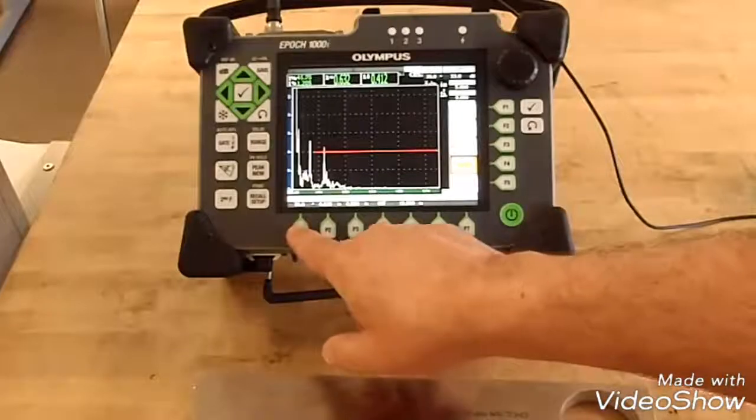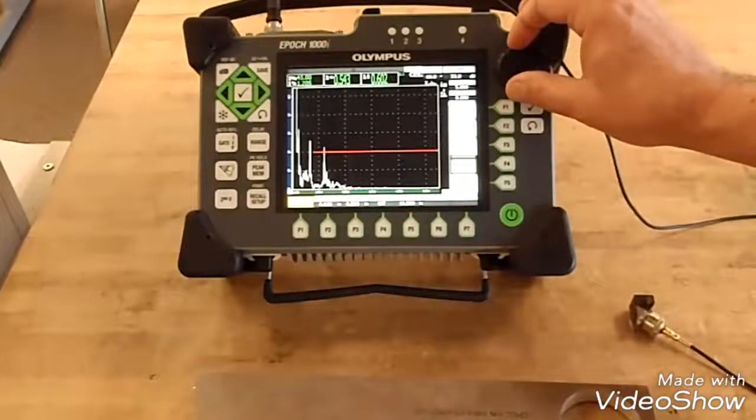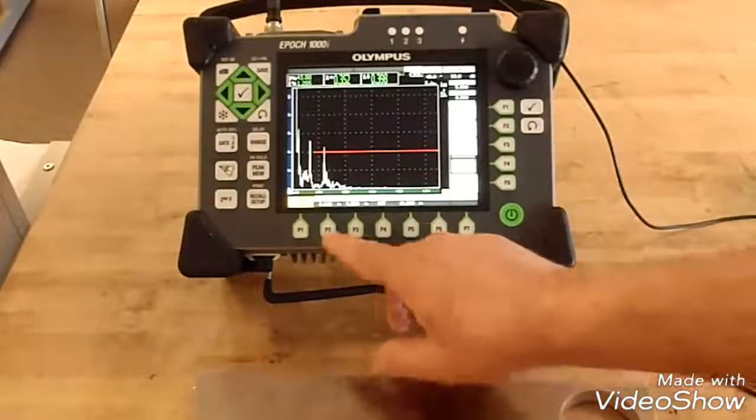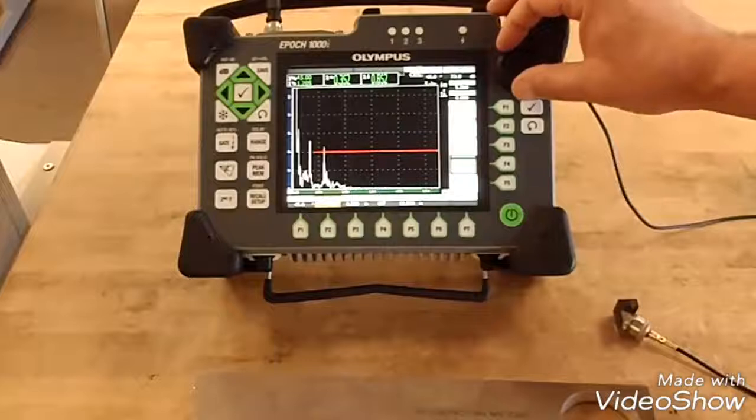On your trig setting, change your angle to 45 degrees because that's the wedge that I'm using. Thickness I'm gonna change that to one inch, even though that's not that important.